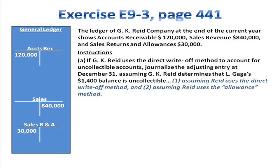Instruction A says: if our company uses the direct write-off method to account for uncollectable accounts, journalize the adjusting entry at December 31st, assuming we determine that customer G's $1,400 balance is uncollectable. The book says to assume we use the direct write-off method. As you can see on the screen, I've also added another assumption. Let's do both — first the way the book asks.